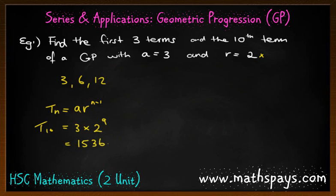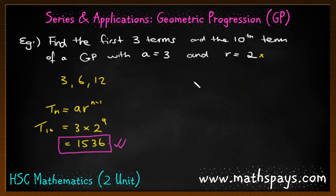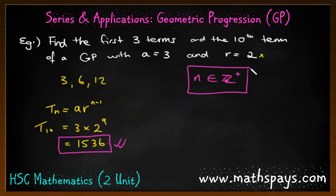It doesn't really matter which form you express it in — if you've got really big numbers and it's easily calculable, certainly write it as a nice integer; otherwise you can leave it in index form. Also remember that when we're finding n, n must be a positive integer. You can't have the 1.7th term — it doesn't work. You need to have the first term, second term, third term, fourth term. And of course they're all real numbers.